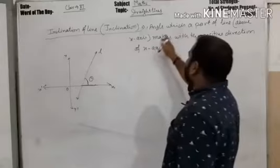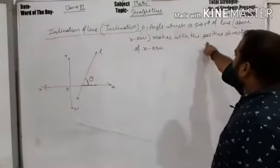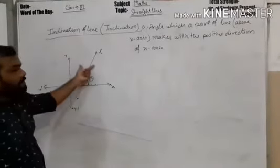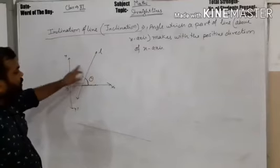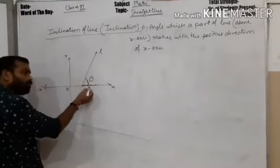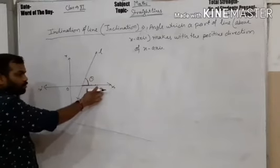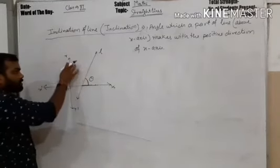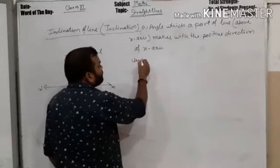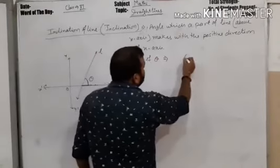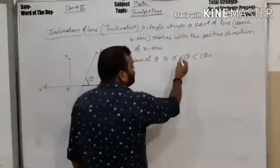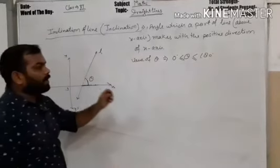That is, the angle which the part of a line above the x-axis makes with the positive direction of the x-axis. The value of theta can be 0 if this line is on the x-axis, and if it is on the y-axis it will be 90. So the value of theta ranges between 0 and 180.